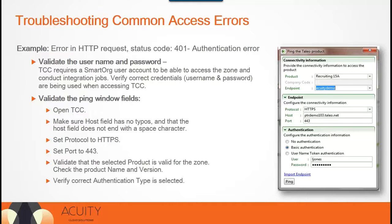Next, a user can validate the ping window field and ensure they are populating it with the correct information. A user would launch TCC and make sure the host field has no typos. The host field does not end with spaces or characters. Set the protocol for HTTPS and set the port for 443. Validate that the selected products are valid for the zone you are working with, and check the product name and version. You should also verify that the correct authentication type is being selected.